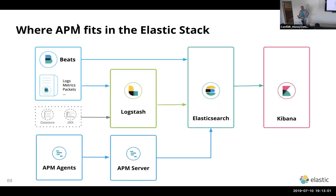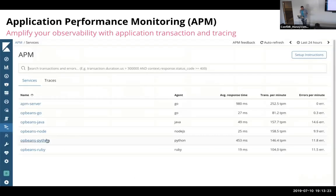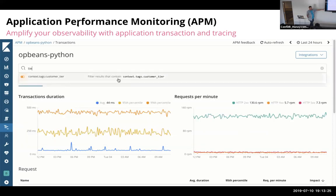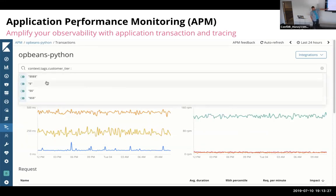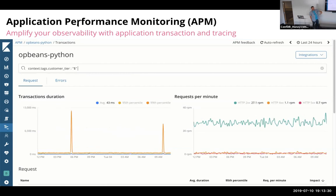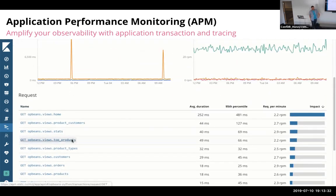Question about Helm chart for the APM server: we don't have a Helm chart for that yet. The APM server is open source and the APM UI is basic license — it's free — but you wouldn't get it on AWS. You would get it if you use Elastic Cloud or self-manage.